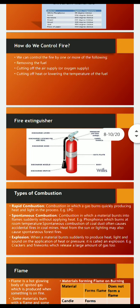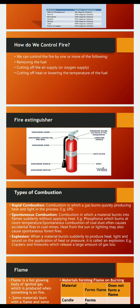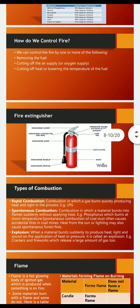Spontaneous combustion is combustion in which a material bursts into flame suddenly without applying heat. For example, phosphorus burns at room temperature. Spontaneous combustion of coal dust often causes accidental fires in coal mines, and heat from the sun or lightning may also cause spontaneous forest fires. In an explosion, a material bursts suddenly to produce heat, light, and sound upon the application of heat or pressure — for example, crackers and fireworks which release a large amount of gas.